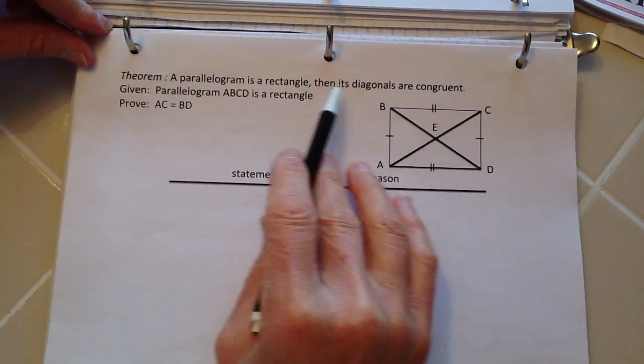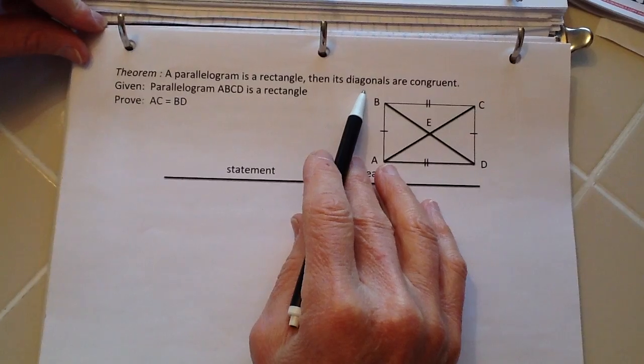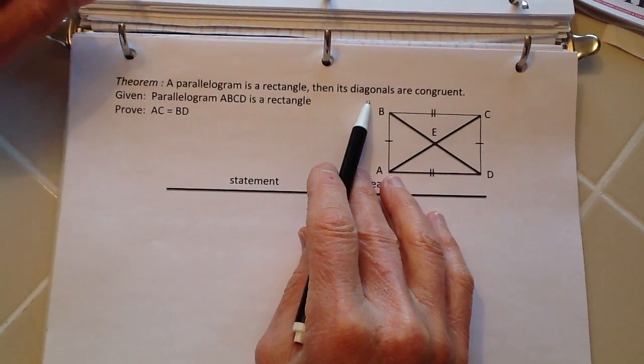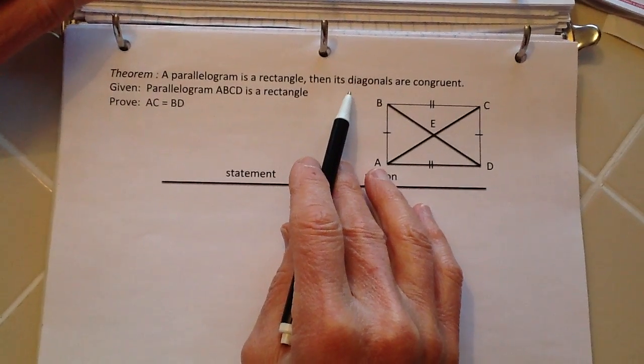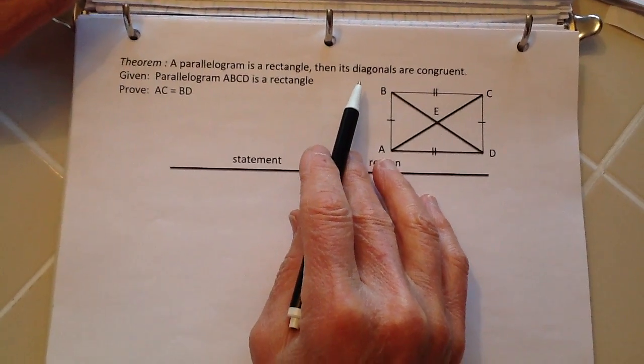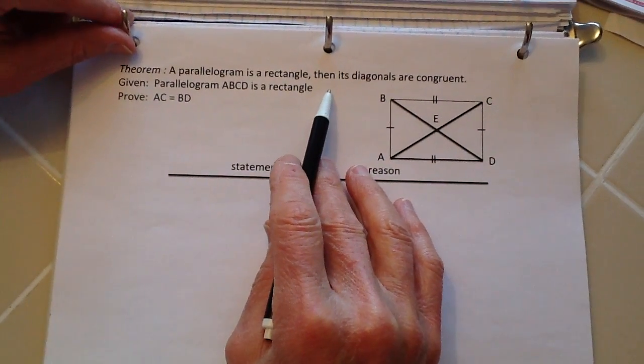This happens to be part of the Common Core requirements of the congruency factors, number 11, and under that one they state rectangles are parallelograms with congruent diagonals.